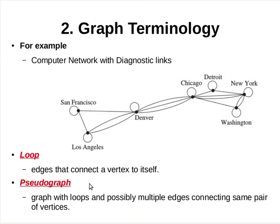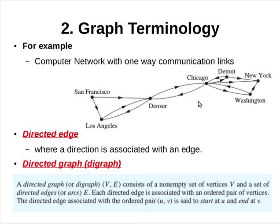So far, the graphs we have introduced were undirected graphs. For example, an edge from Chicago to New York represents a communication link between the data center of Chicago and New York, as well as a communication link between New York and Chicago.